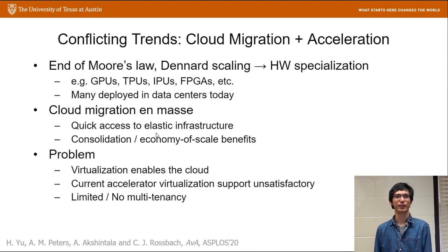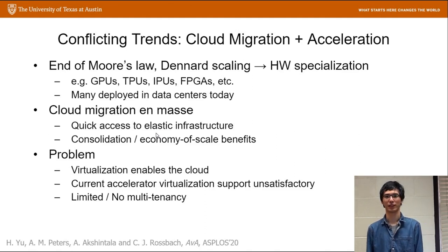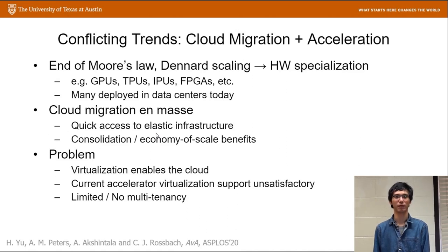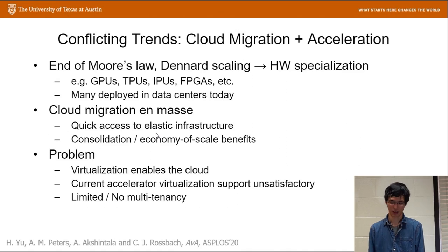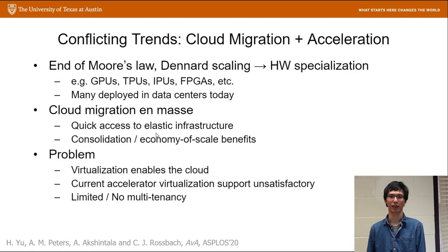In recent years, we have seen two conflicting trends. First, due to the end of Moore's Law, lots of new specialized accelerators are designed for better performance and energy efficiency. Many of them have been deployed in data centers. Second, a lot of workloads such as machine learning are migrating to the cloud for elastic infrastructure. Multiple tenants are consolidated on the same servers to amortize costs and improve resource utilization.